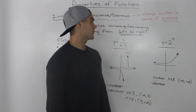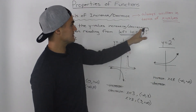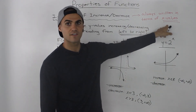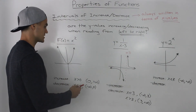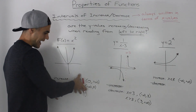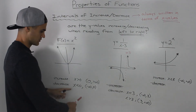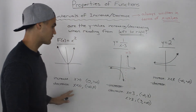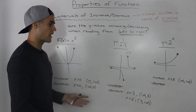One more point before finishing: these intervals of increase and decrease are always written in terms of x values. When we're looking for intervals of increase or decrease, we're looking at whether the y values are increasing or decreasing — but when we actually write the intervals, it's always in terms of the x values. You would never write intervals of increase or decrease in terms of y values; they're always written in terms of the domain.